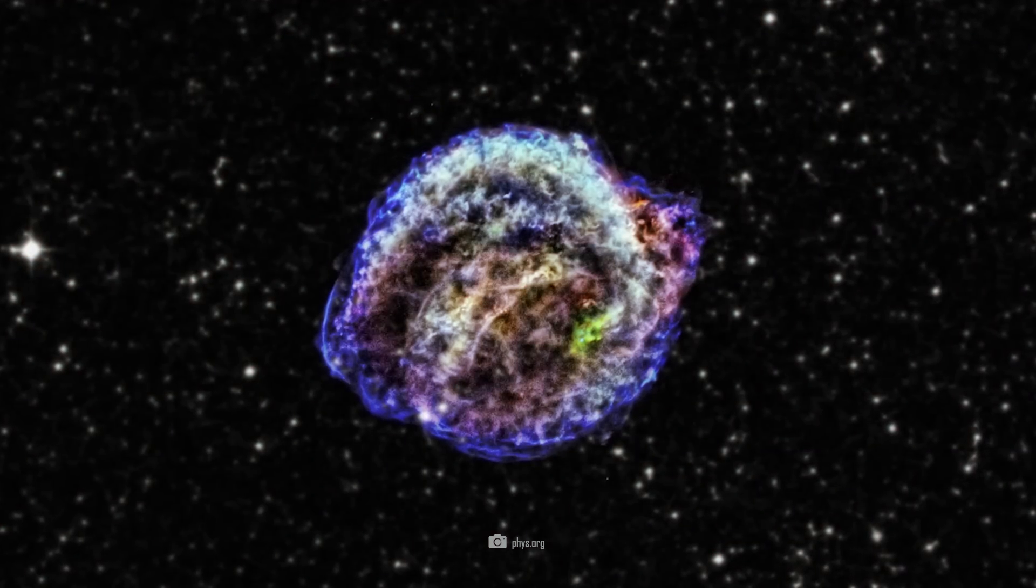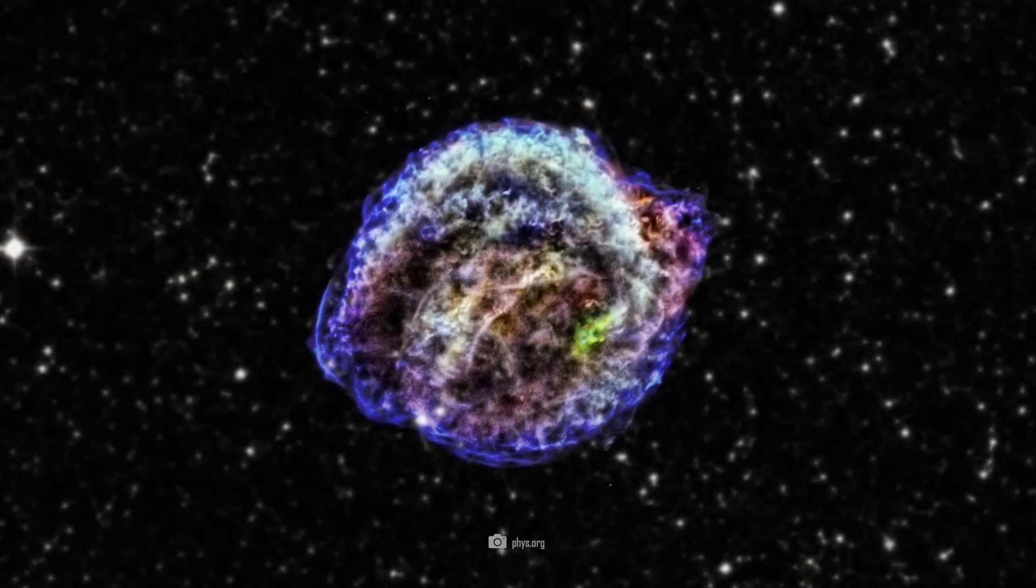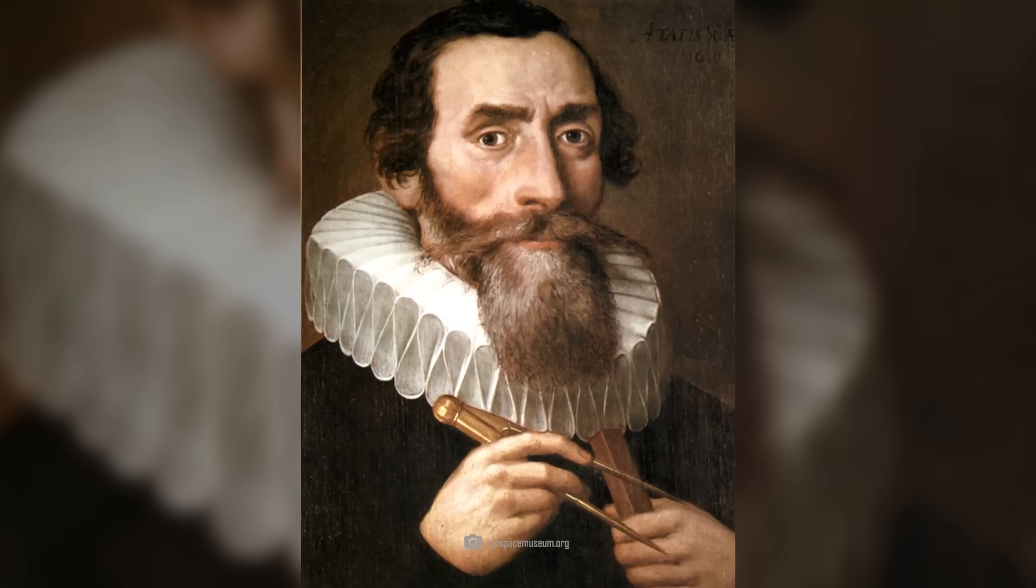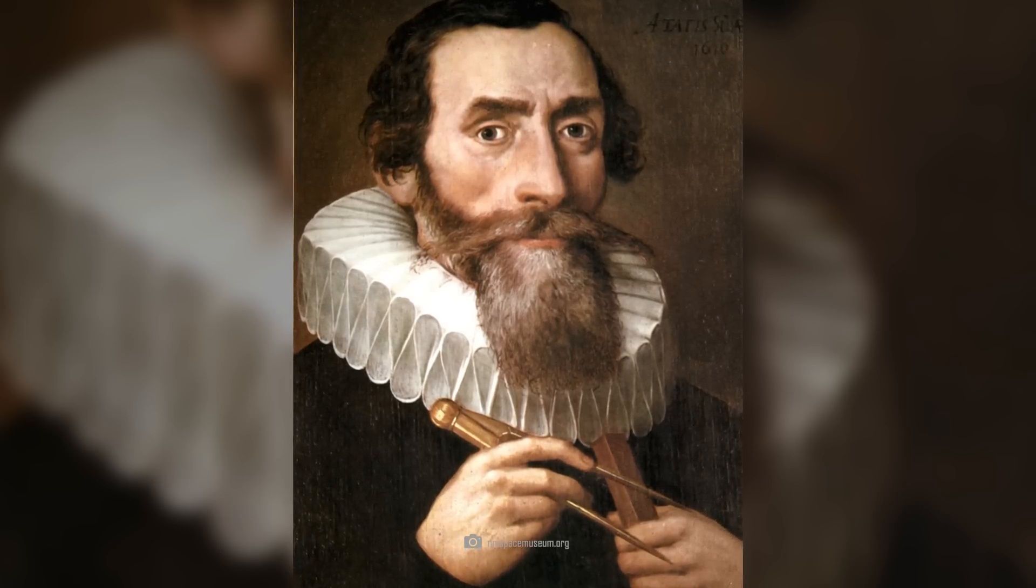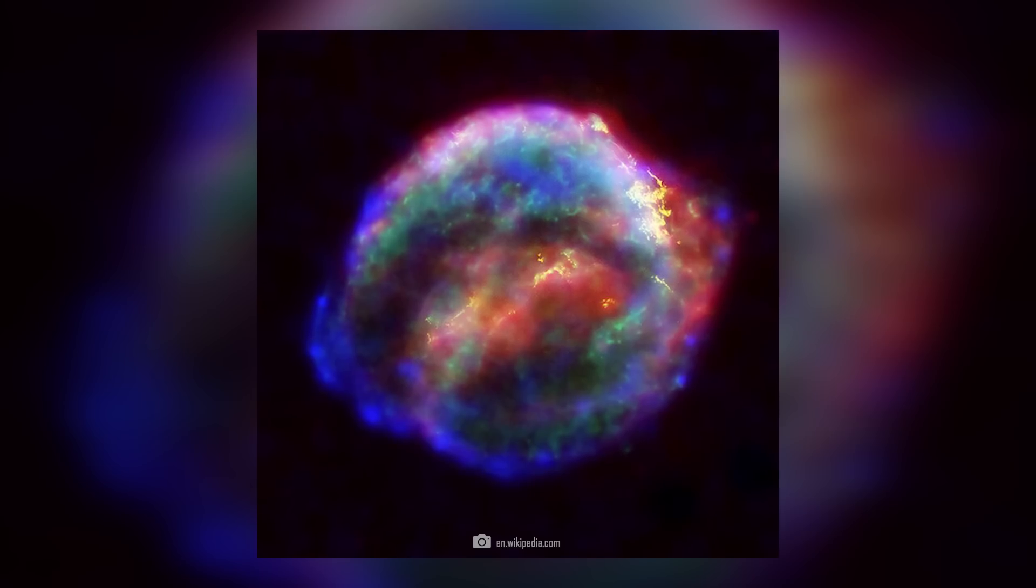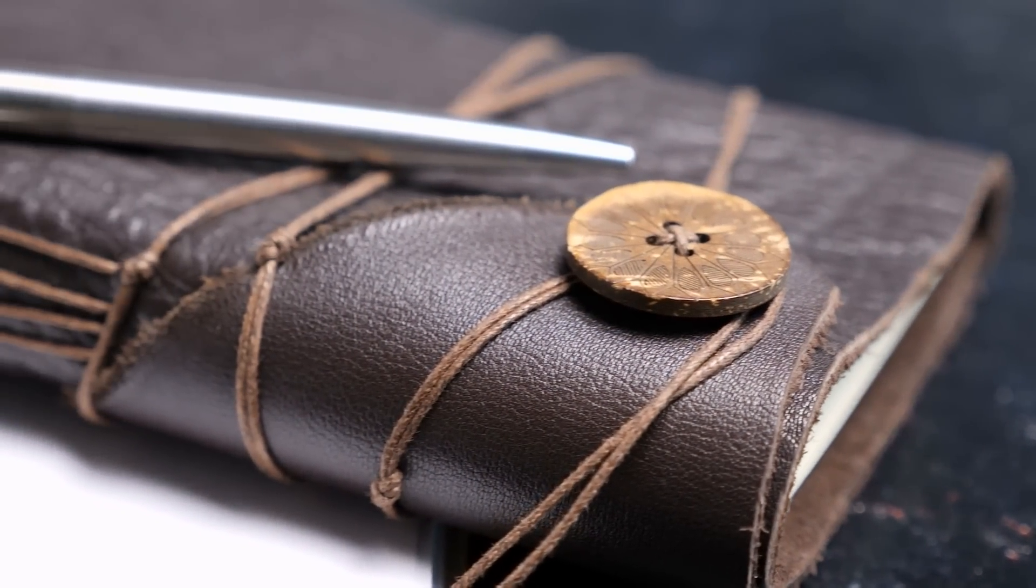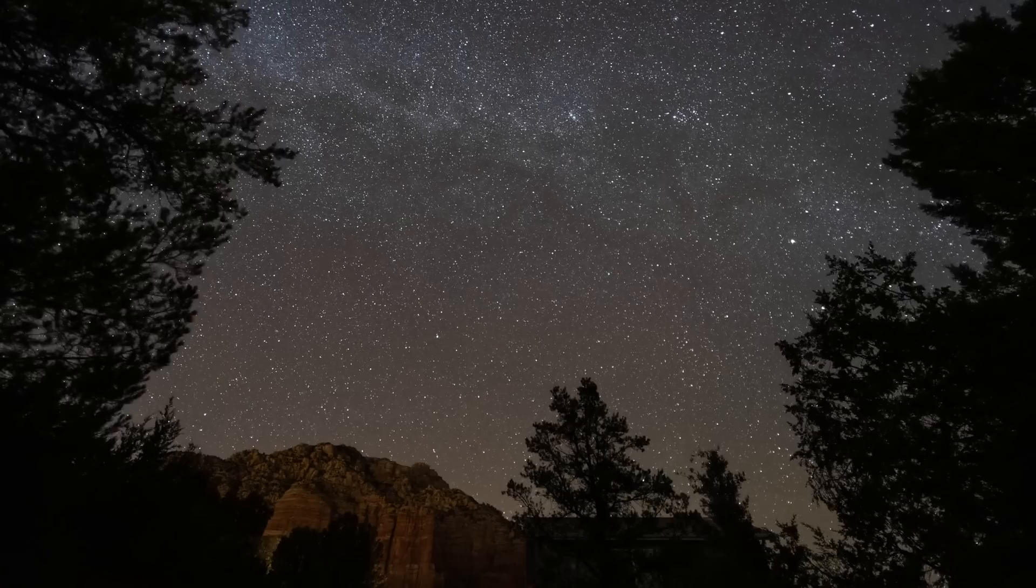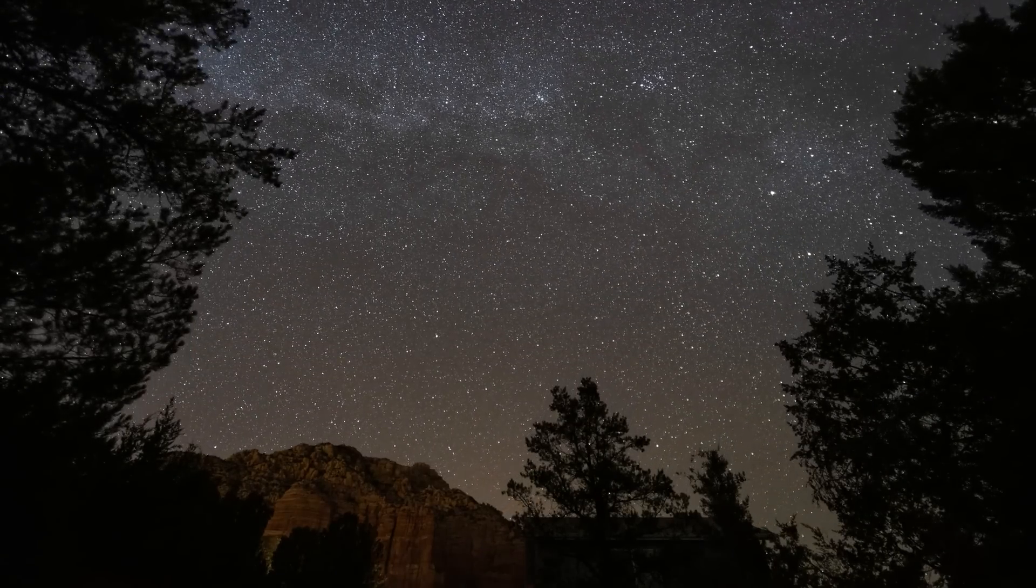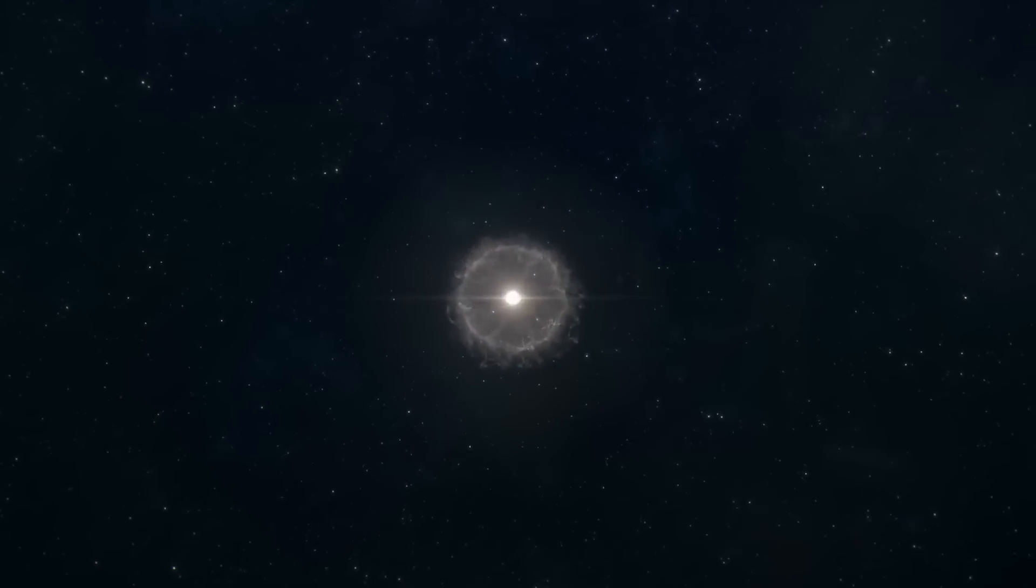Even further back in history, there was the supernova SN1604, also known as Kepler's supernova. In 1604, the famous astronomer observed the apparent birth of a new celestial body in the constellation of the Serpent Bearer. This supernova was so bright that it was visible in the daytime sky for several weeks. Kepler was astonished to note in his diary that a star had been born that shone almost as brightly as the moon. People have certainly observed a supernova in our cosmic neighborhood from time to time. However, there are no records of this.